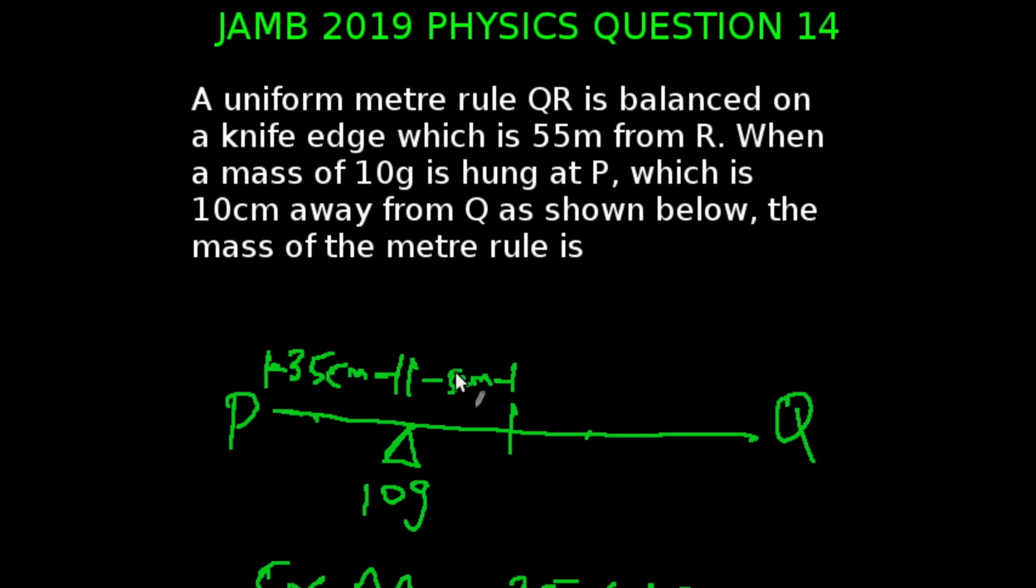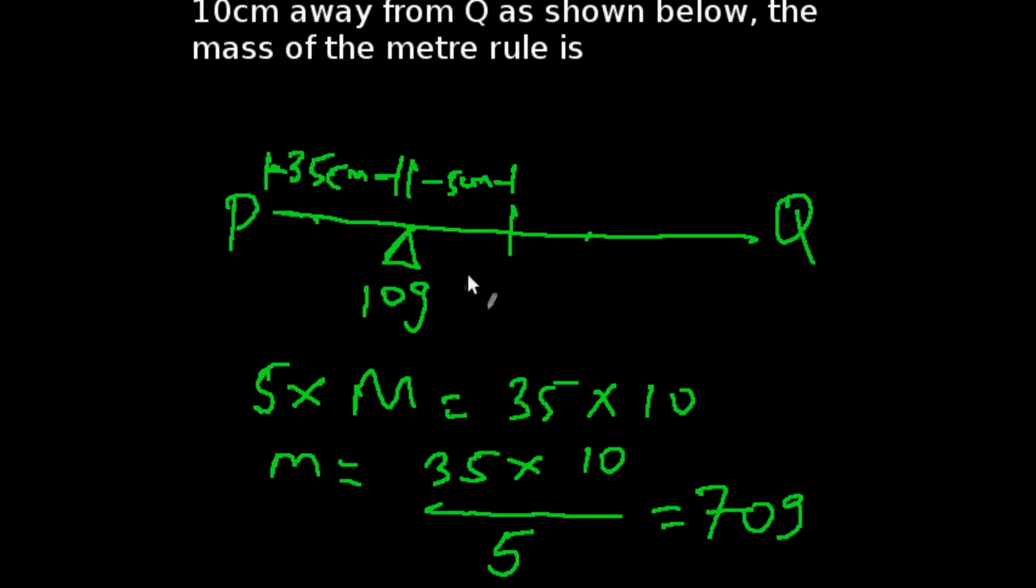We have drawn our meter rule diagram. And so we are going to be using the principle of moments to solve this problem. Let us assume that our mass is m. We are going to be having 5 times m equals 35 times 10 according to this diagram.